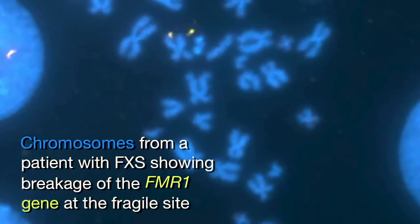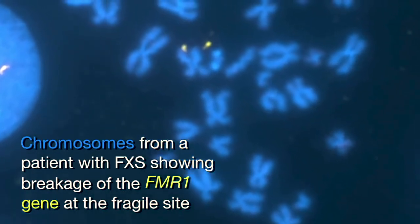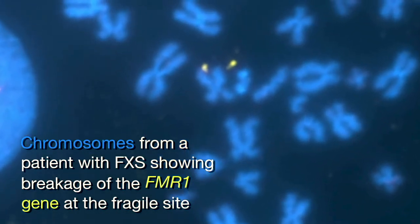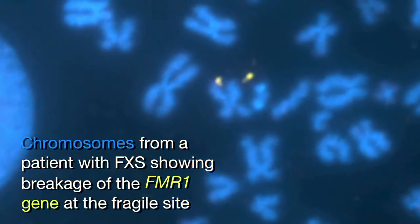In the case of Fragile X syndrome, we know that the gene product, FMRP, is missing, and the gene is silenced. You don't make the protein.